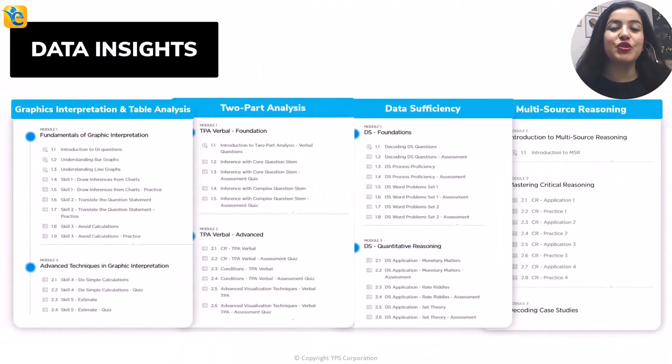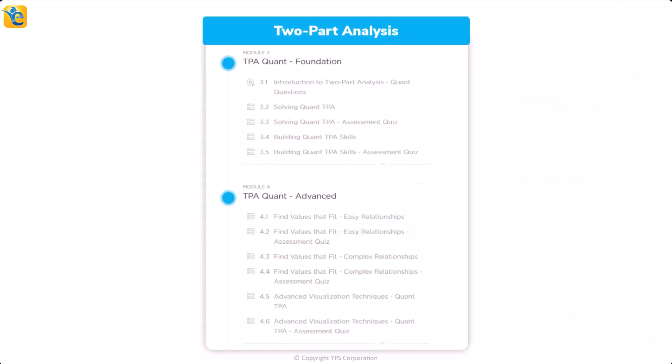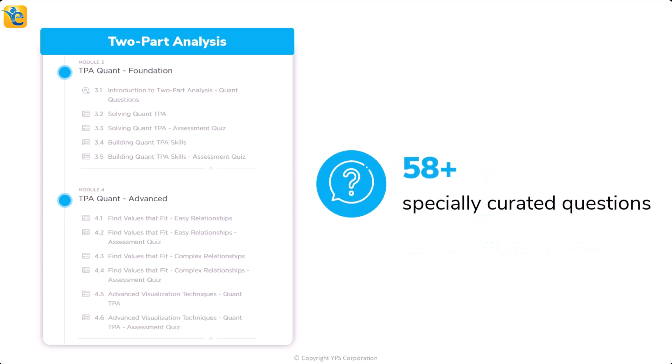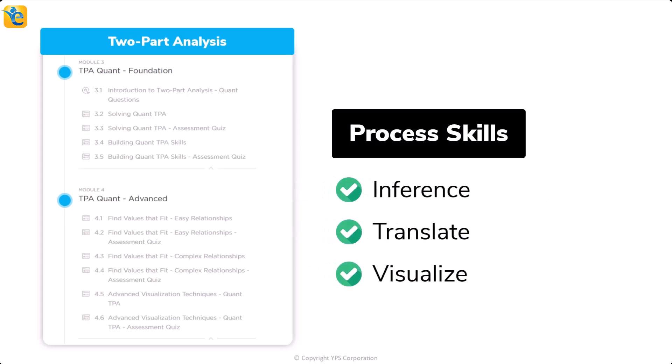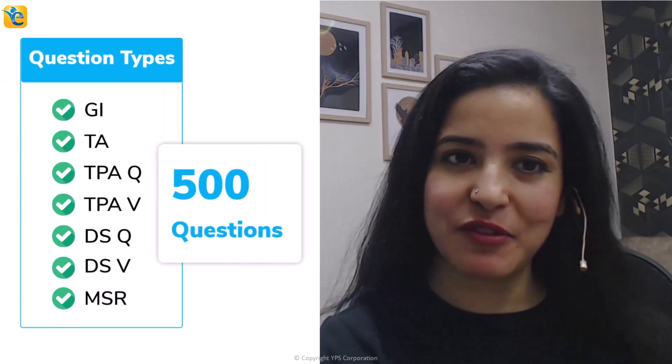At this point, let me ask you this. Could you have arrived at the approach of solving this question with this level of clarity, had you not spent the effort in thoroughly understanding the information presented? Such is the power of the process of owning the data set. And because this skill may not come naturally to many of you, we have created a course architecture that ensures that we teach you this skill through every guided quiz in the EGMAT DI course. And we reinforce the same in every practice quiz. In fact, in the TPA quant modules in the two-part analysis course, we teach you how to get comfortable with this question type. You will gain the confidence to handle any question of this type in the most efficient manner. We serve more than 58 specially curated questions at the right progression so that you can learn various aspects of this question type, including the process skills of inference, translate, and visualize. Thus, throughout the DI course, through around 500 questions, you will learn such process skills so that you can also comfortably use the owning the data set approach. Let's now get back to the solution at hand.